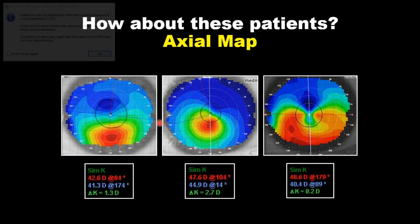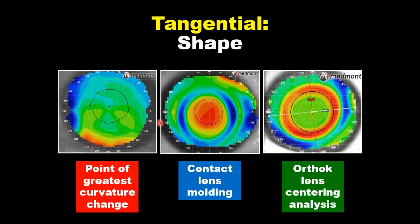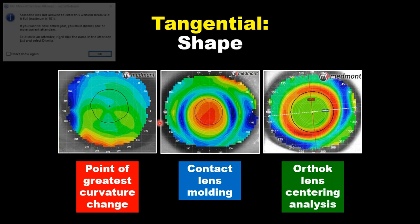Now another interpretation that we use is called the tangential map, and what it describes is shape — where does the cornea curve, where is the cornea flat. So the tangential map tells us not about corneal power but about corneal shape.